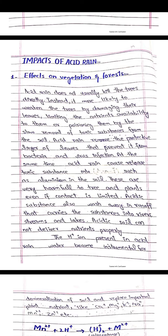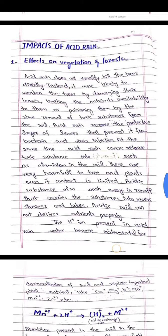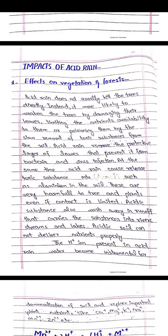At the same time, acid rain causes the release of toxic substances such as aluminium into the soil. These are very harmful to trees and plants even if contact is limited. Acidic substances also wash away in runoff that carries them into rivers, streams, and lakes.